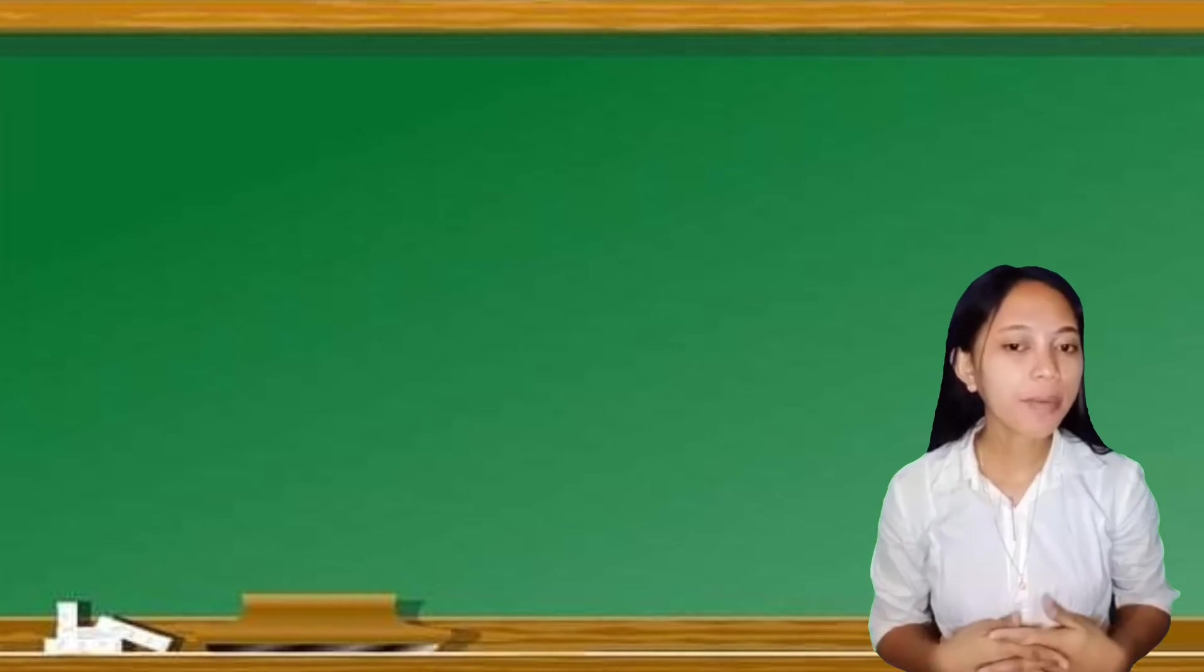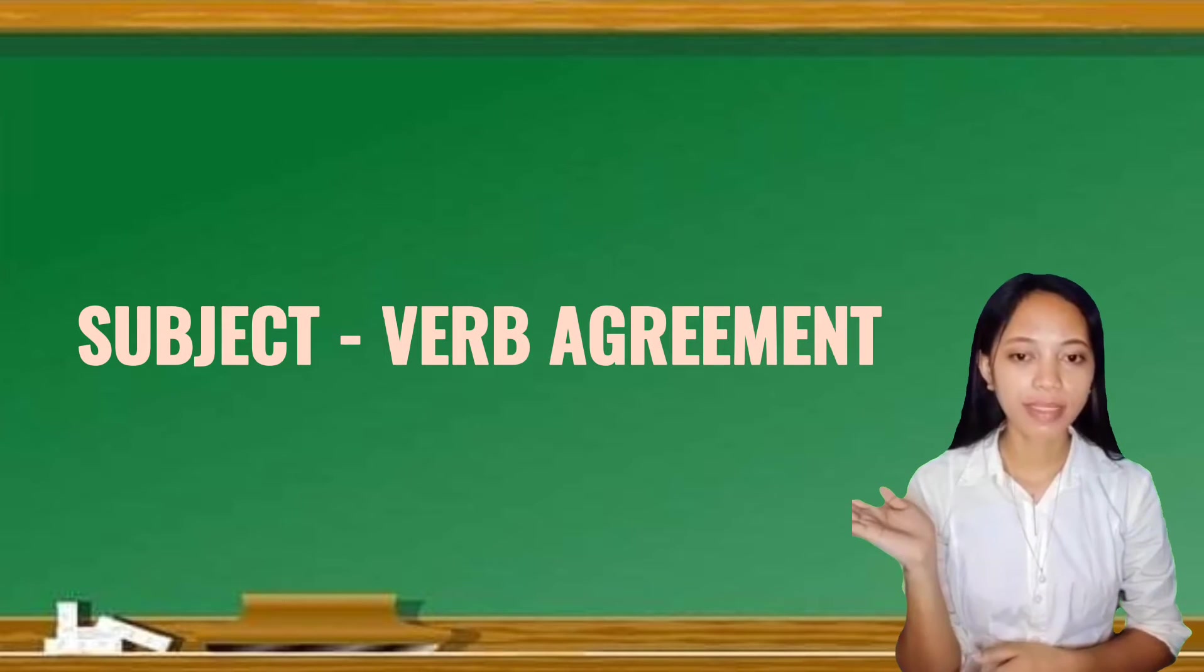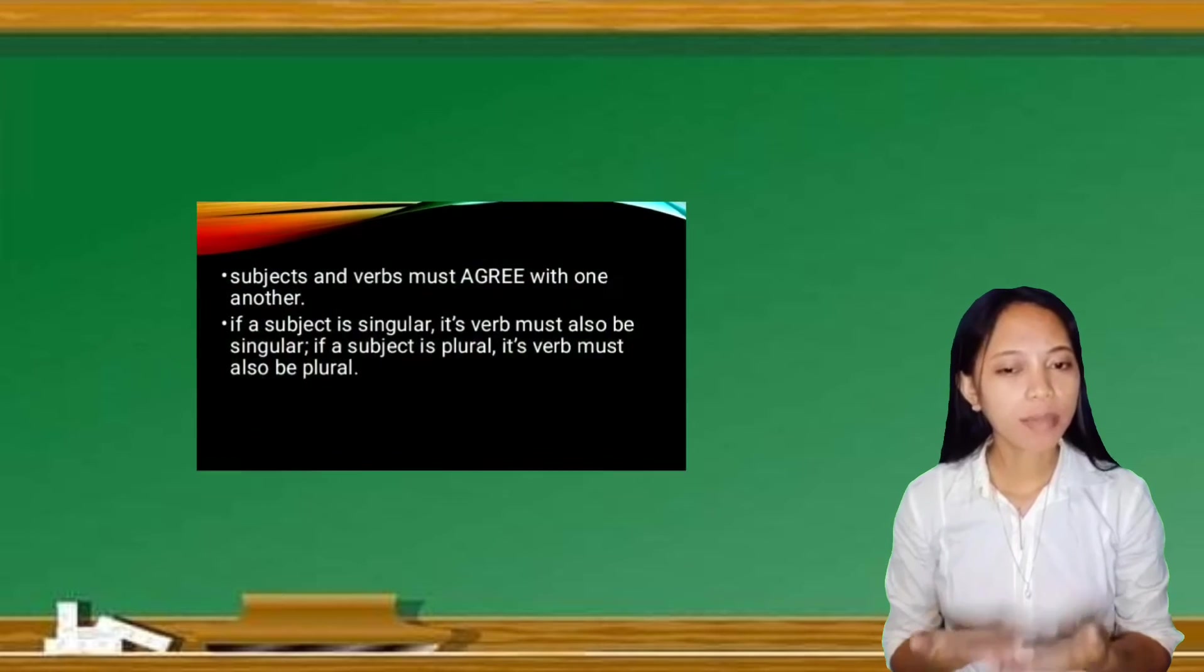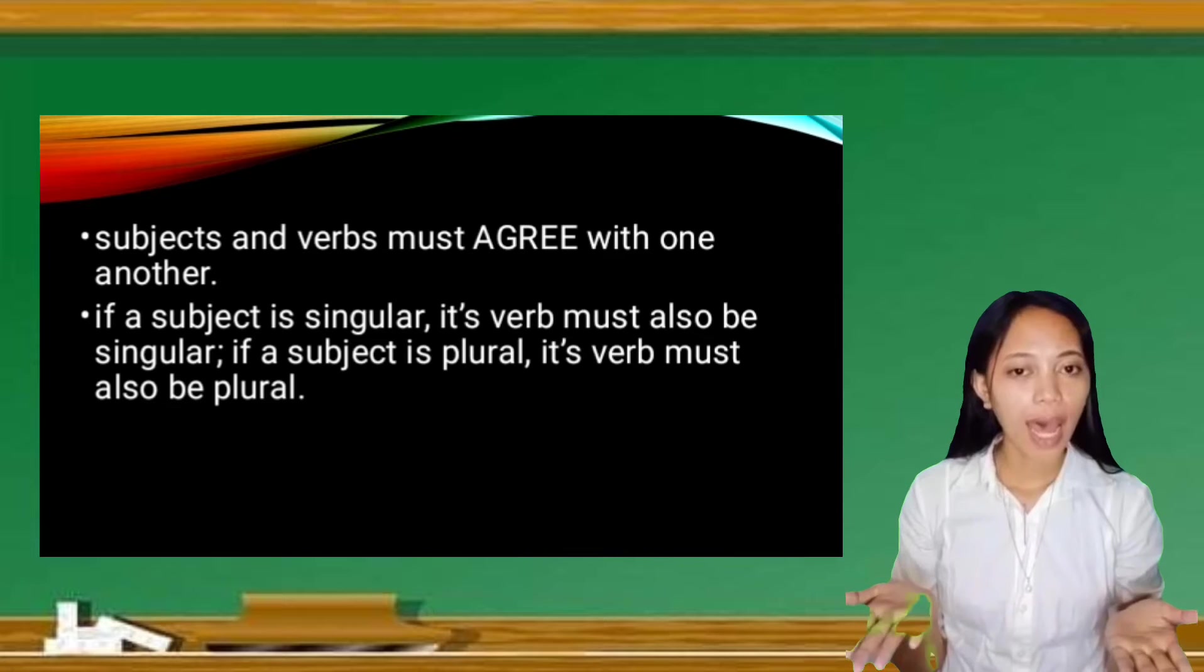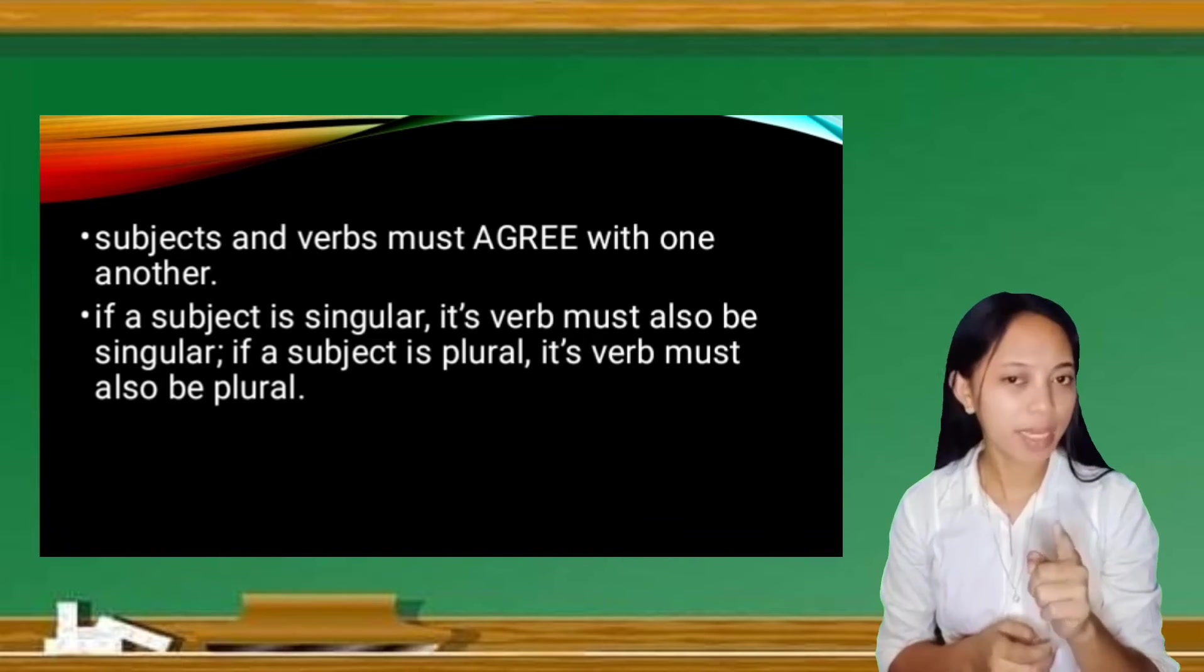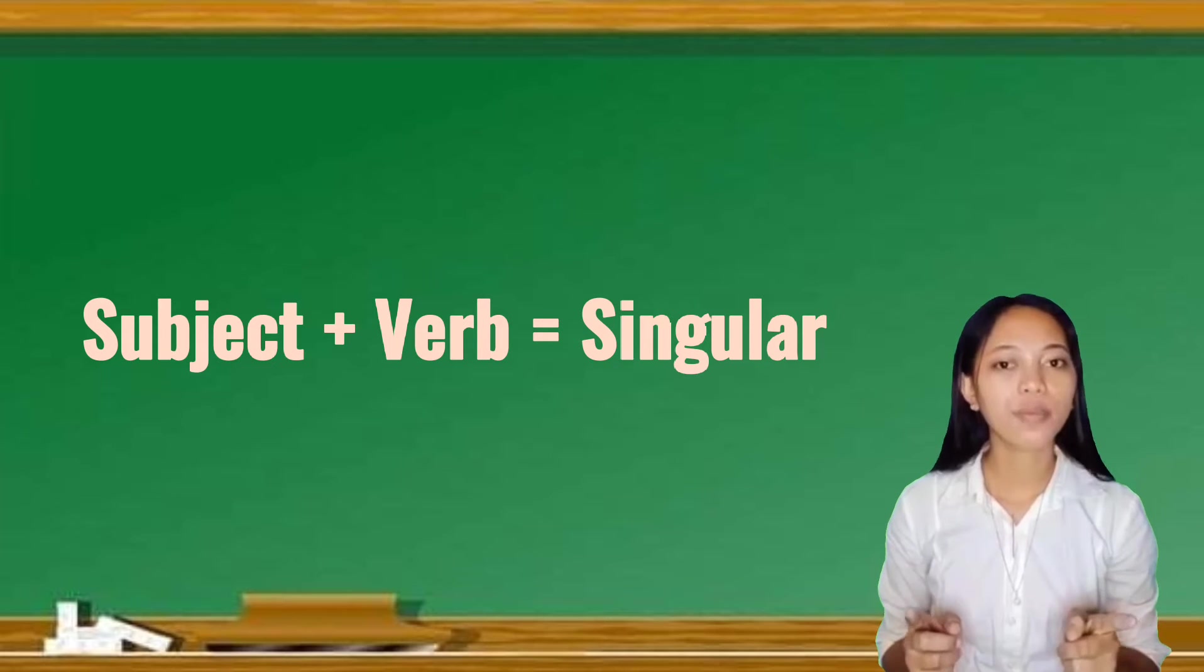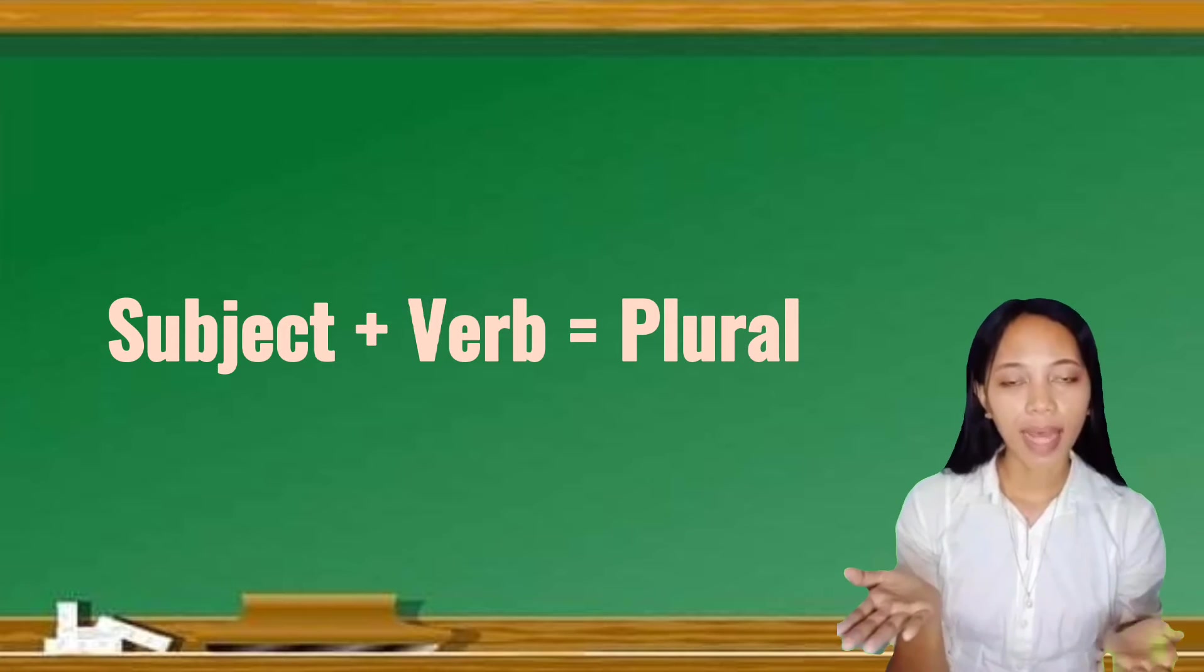So, is anybody here has an idea of what is subject-verb agreement? Okay, seems like no one wants to answer. So, when we say subject-verb agreement, this means that the subject and the verb has to get along with each other. So, what that just means? That means that when the subject is singular, then the verb has to be singular. When the subject is plural, then the verb has to be plural.